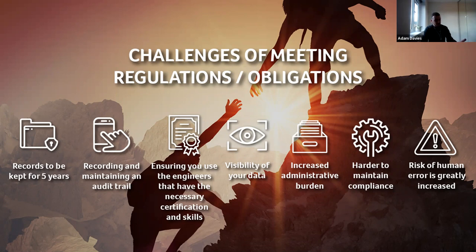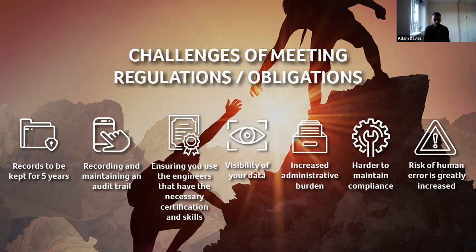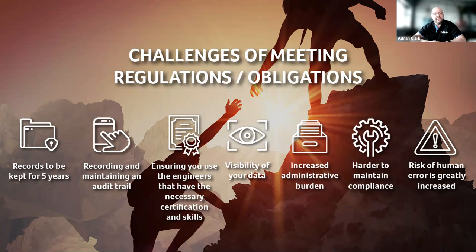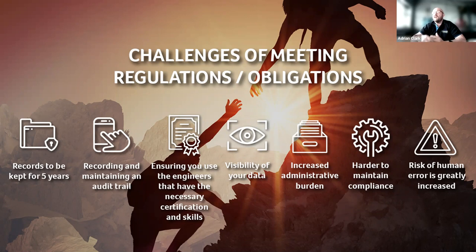They may or may not have a service management or ERP system that manages a large proportion of their work, but it kind of ignores the FGas side — what gases they use, the audit trail, and that kind of thing. That always falls down to Excel: a very manual way of managing it, someone in the office logging manually what gases are used. One client said the only way they knew was by sifting through old invoices of what they'd actually bought.